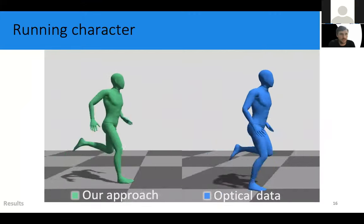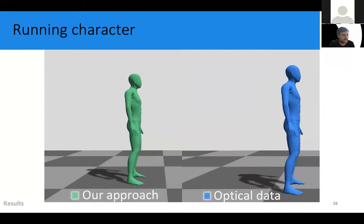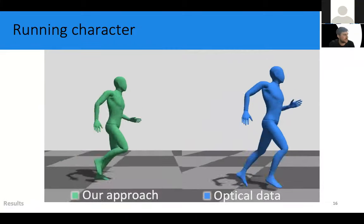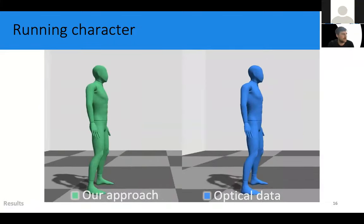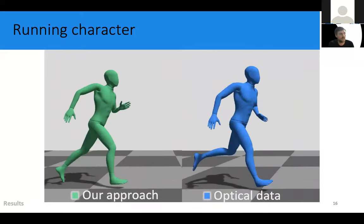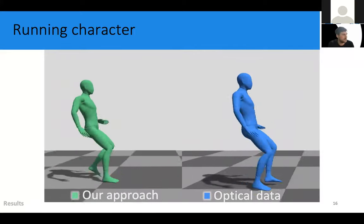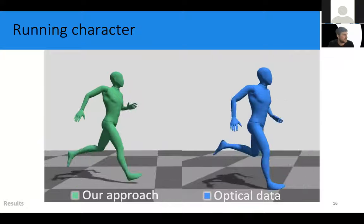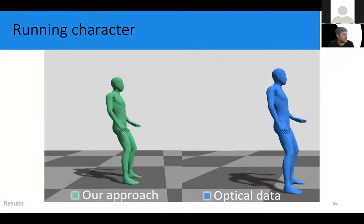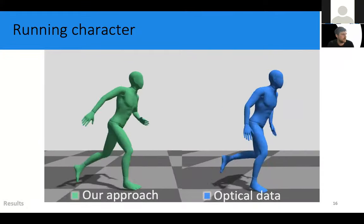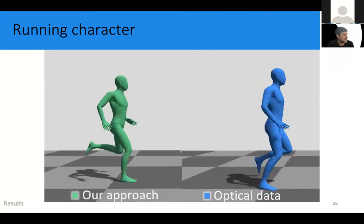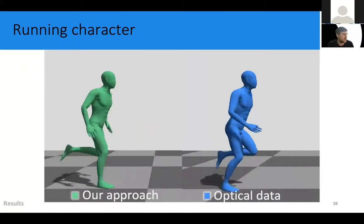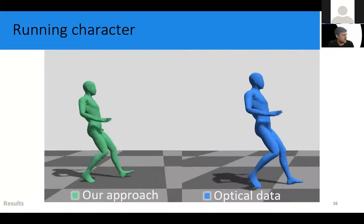So here are some animations of our results. So what you see here on the right is the ground truth optical data. And on the left is our approach where we have estimated the global displacement. So as you can see with this character running, the estimations are pretty good. The character displacement is in sync in such a way that you don't see a lot of foot slide.